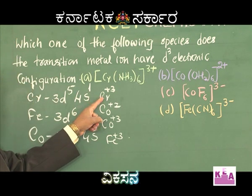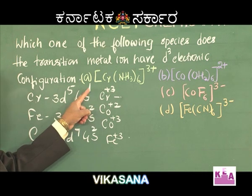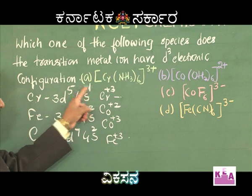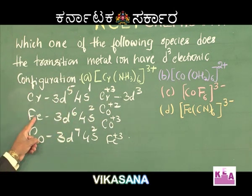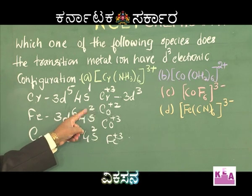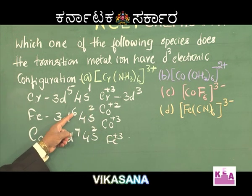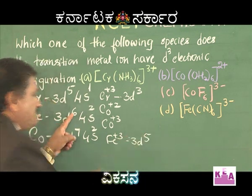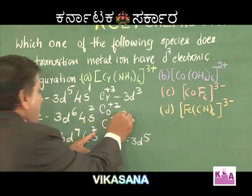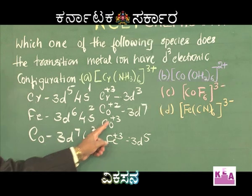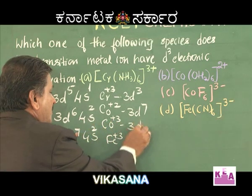From the configuration of chromium, we get the configuration of Cr³⁺. Chromium³⁺ ion is formed by the loss of the one 4s electron and two 3d electrons — three electrons are lost — leaving it with a 3d³ electronic configuration. Fe³⁺ loses two 4s electrons and one 3d electron, giving a 3d⁵ configuration. Co²⁺ loses only two 4s electrons, giving 3d⁷. Co³⁺ loses two 4s and one 3d electron, giving a 3d⁶ configuration.